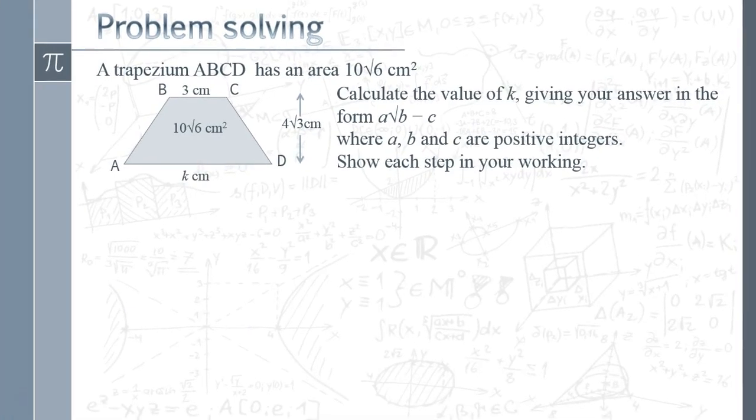Finally we're going to put our surd work into a little problem solving question, putting into the context of solving the area of a trapezium. So we're told that the trapezium has got an area of 10√6 centimeters squared, we're given some of the other dimensions, and we've got to find the length of the bottom side AD which is currently we're told is k. We've got to write it in a particular form and that form there is a√b minus c, so we've just got numbers there that will replace the a, b and c.